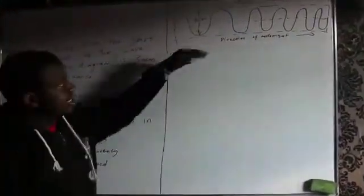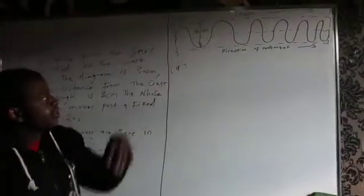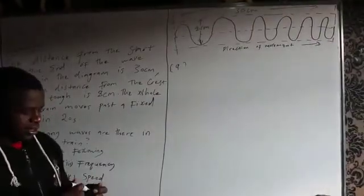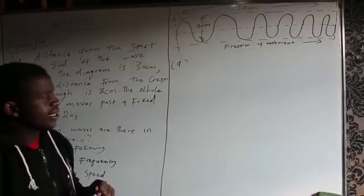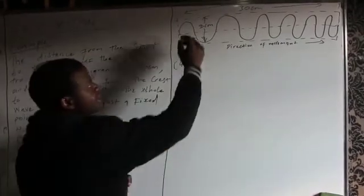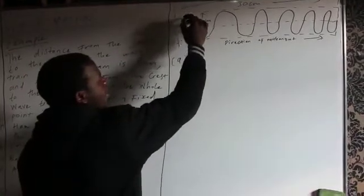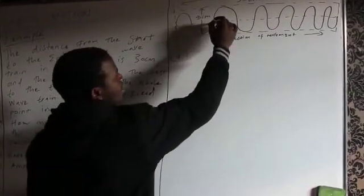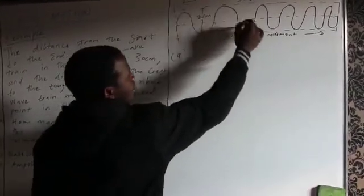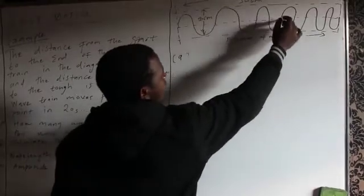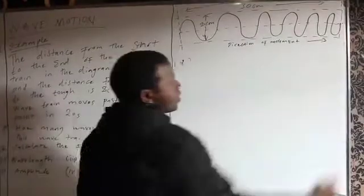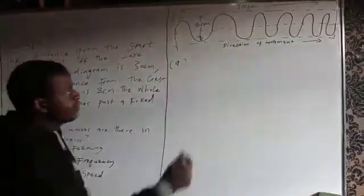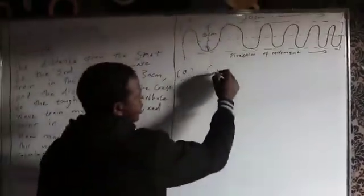How many waves are there in this wave train? Looking at the diagram, the definition of wavelength is the minimum distance at which a wave repeats itself. So I'll start counting from E to E: 1, 2, 3, 4, 5, 6. So there are 6 waves in this wave train.